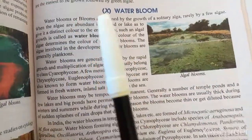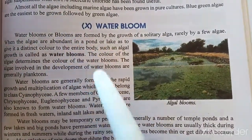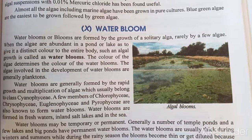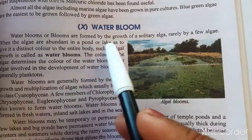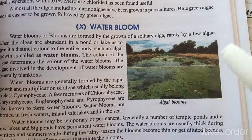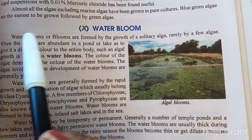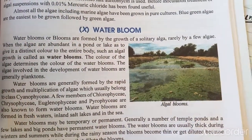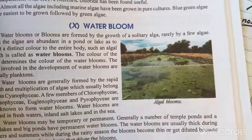Water bloom and algal bloom. Algal blooms involve the rapid growth and multiplication of algae. They can form from solitary algae or a few algae growing together, until the algae become abundant. This gives ponds and lakes a distinct color throughout the entire body of water.